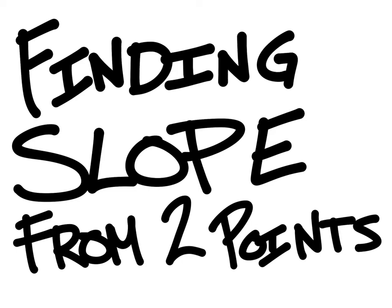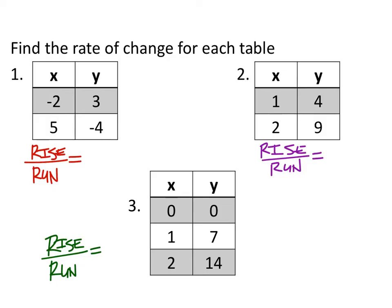Hey guys, this is Mr. Sal. We're going to look at a lesson on finding slope from two points. From now on, they're going to take those graphs and grid lines away from us, so we've got to have a method to find the slope from just the two points. Even though some problems say rate of change, it's still the slope, because the constant rate of change is the slope.